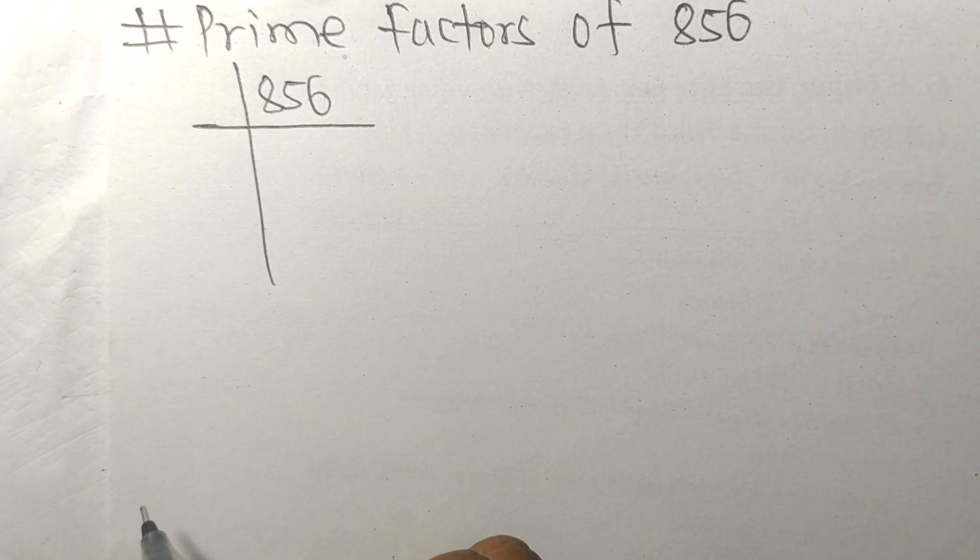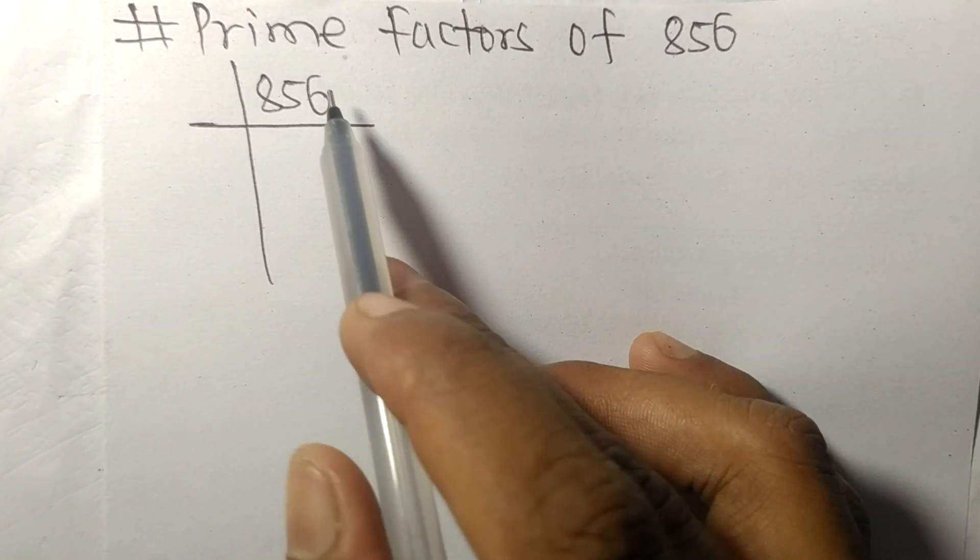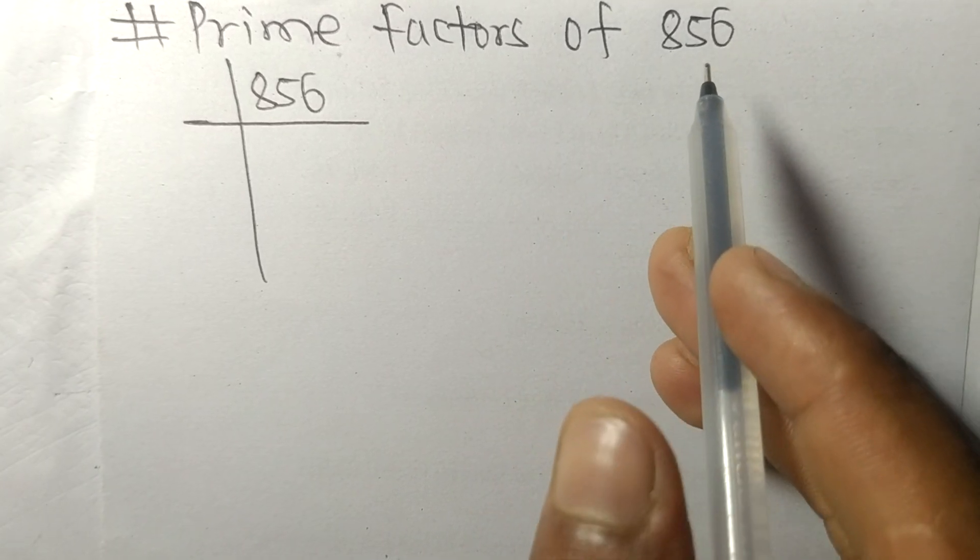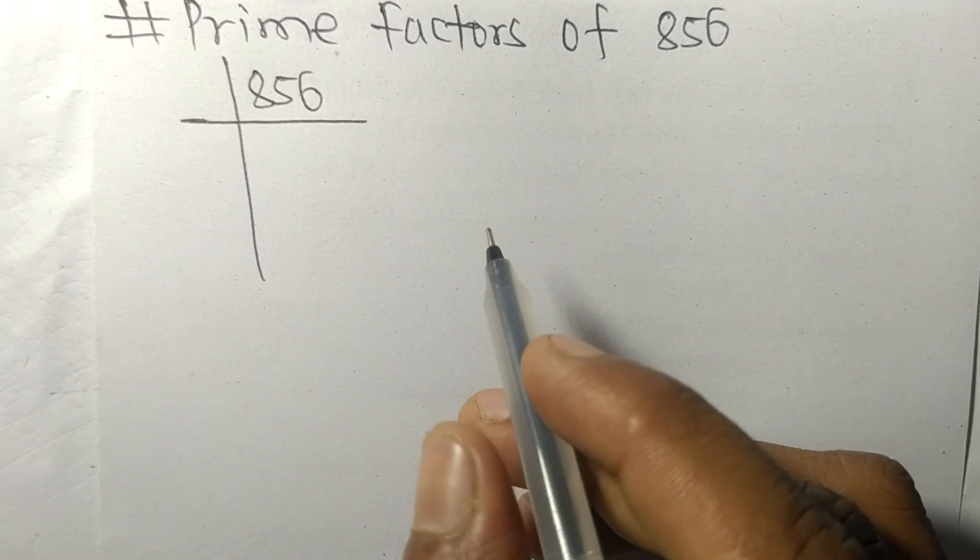So today in this video we shall learn to find the prime factors of 856. So at last it contains an even number 6, so this whole number is divisible by 2.